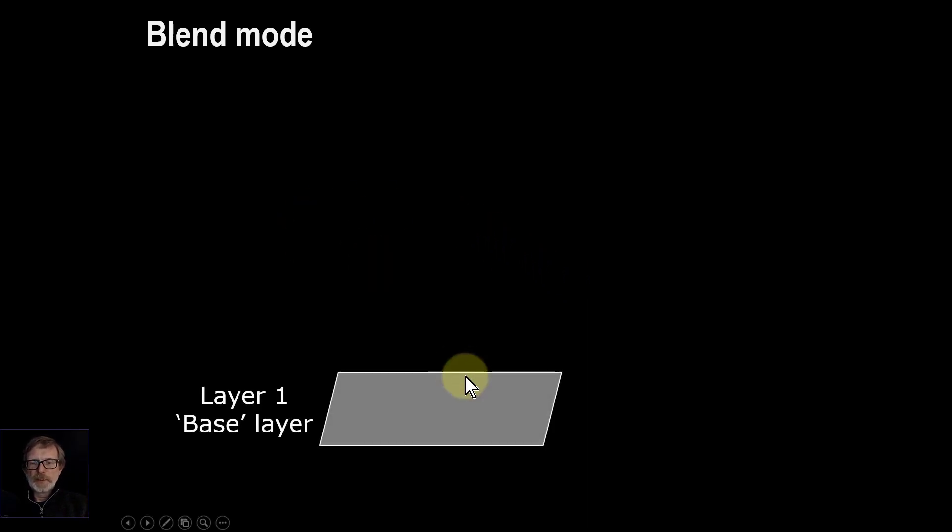So here we go and we start off with a layer in Affinity Photo and we call this one the base layer because this is where we're starting from when we are going to do a blend. And the word base comes from the way that Adobe Photoshop uses it. You could use bottom layer if you like, the same thing really.